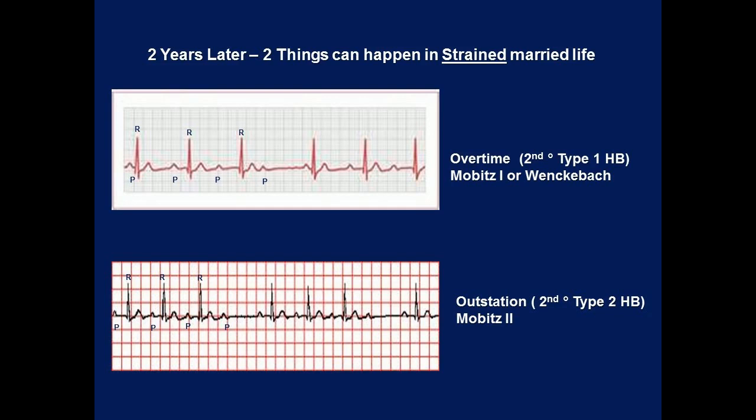Here, there is progressive prolongation of the PR interval until a QRS is dropped, and it continues in a cycle — group beating. After the drop beat, the cycle starts all over again.